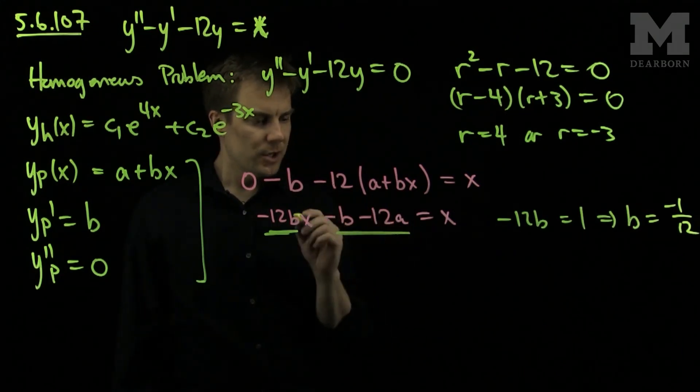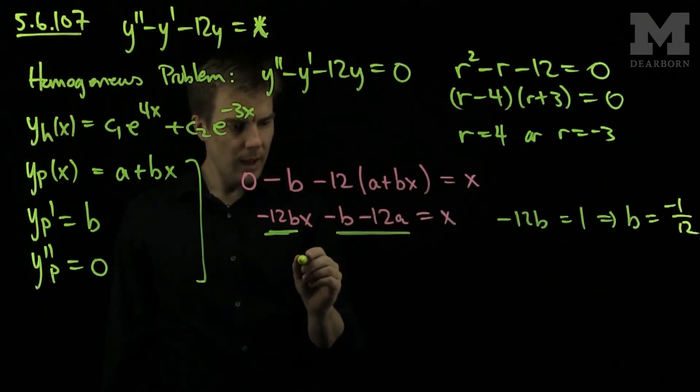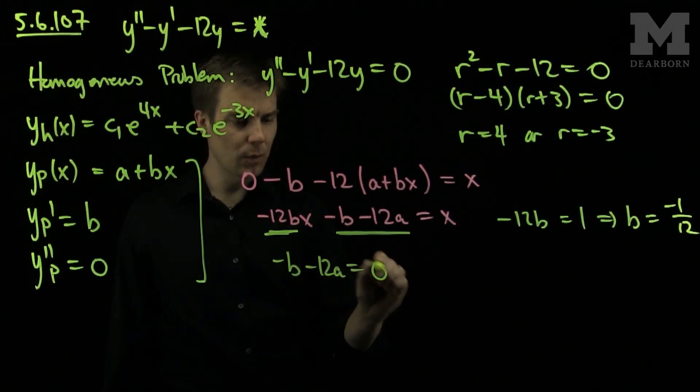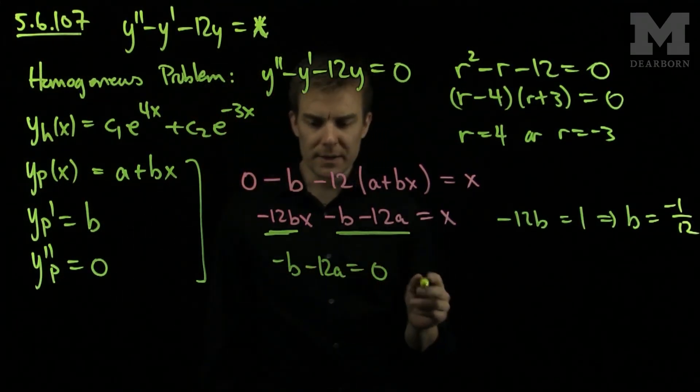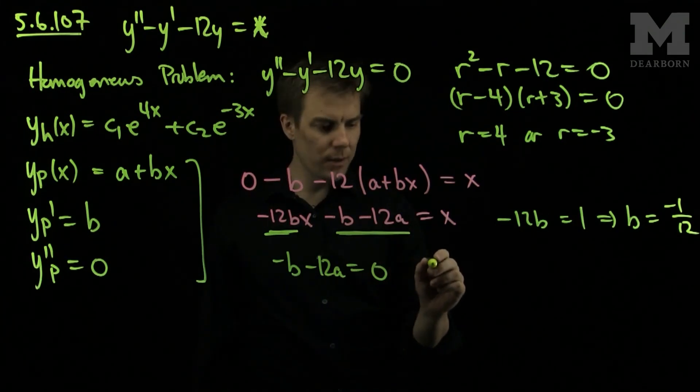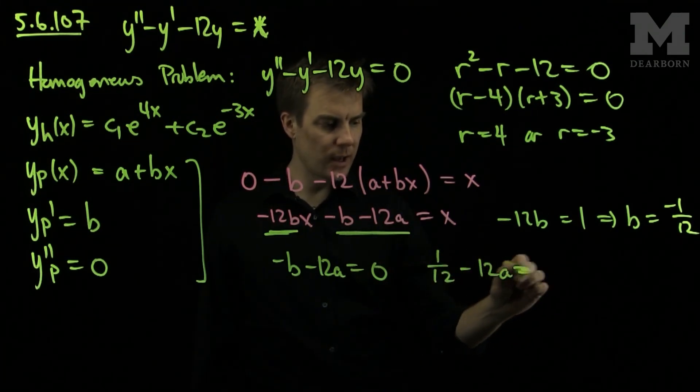And this expression over here must be zero, so I have negative b minus 12a equals zero. But if b is negative 1 twelfth, this is 1 over 12 positive, minus 12a equals zero.